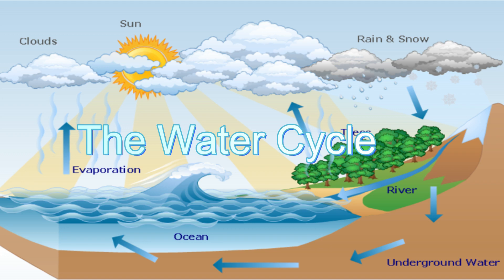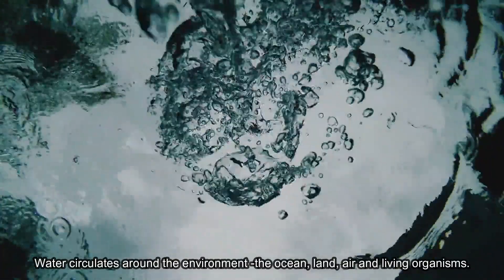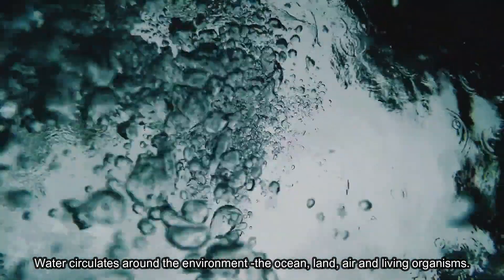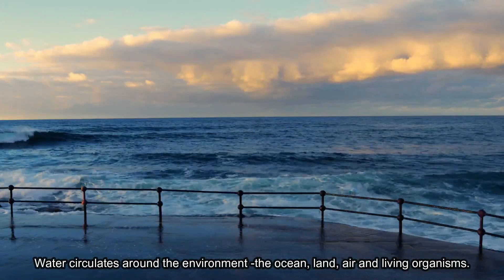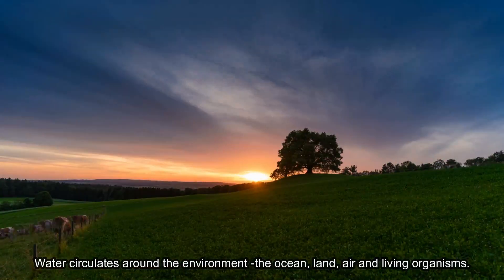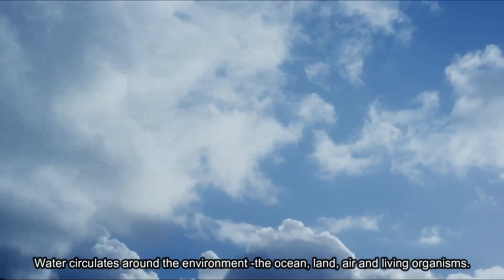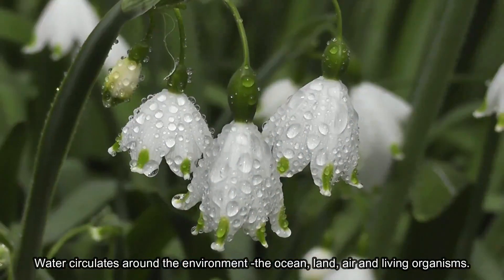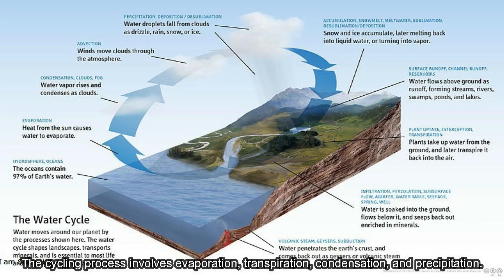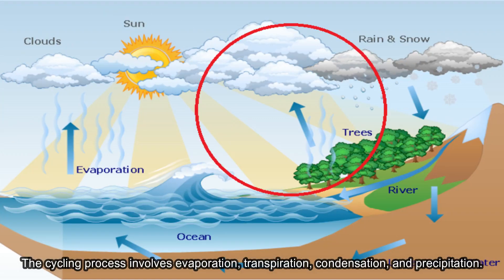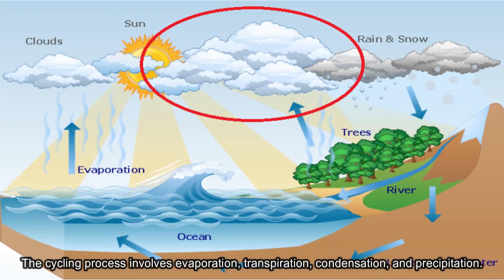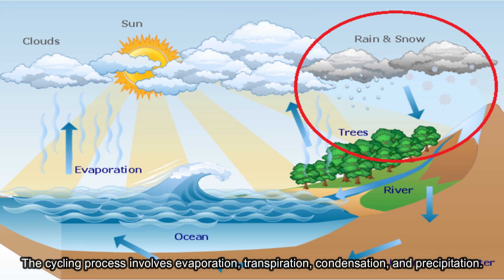The Water Cycle. Water circulates around the environment — the ocean, land, air, and living organisms. The cycling process involves evaporation, transpiration, condensation, and precipitation.